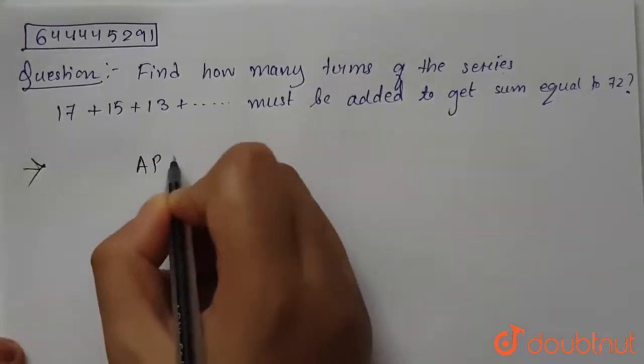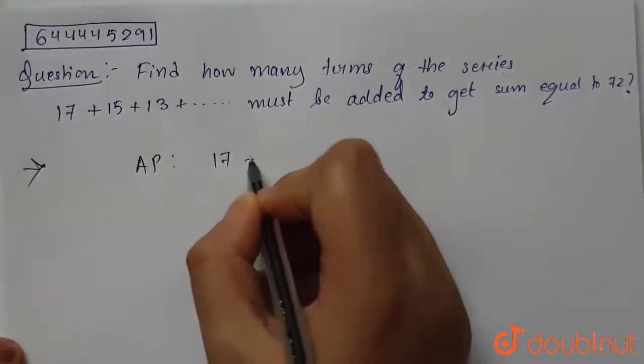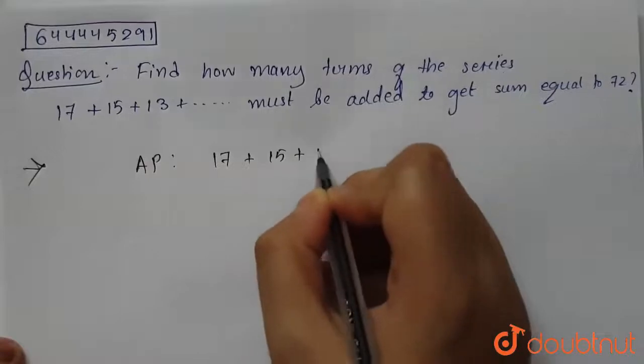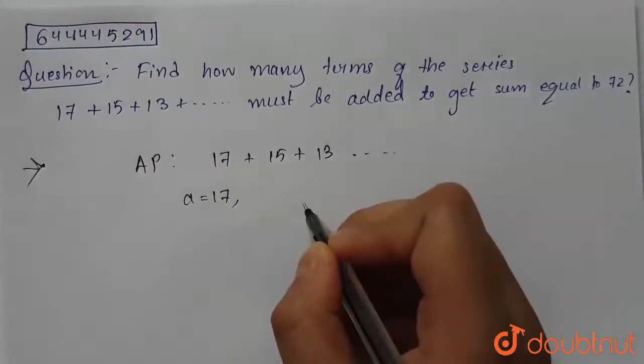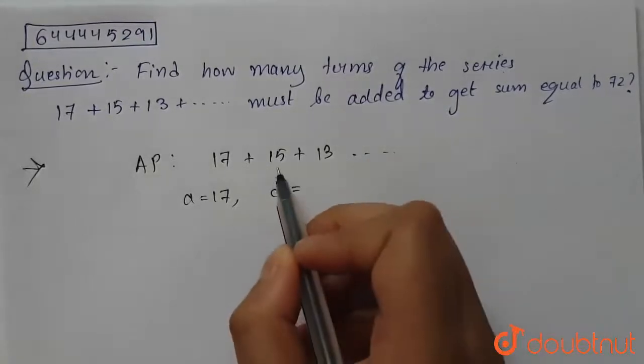We are given AP because we can see that it's 17 + 15 + 13. So the first term a is equal to 17 and the common difference d, which is the difference between the second term minus first term, is 15 - 17 which equals minus 2.